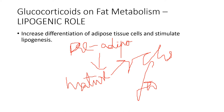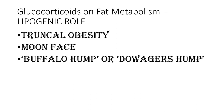The lipogenic effect of glucocorticoids varies in different regions of the body — there is selective accumulation of fat in certain regions such as the trunk, the face, and the back. This leads to the characteristic features of truncal obesity, moon face, and buffalo hump (or dowager's hump) seen in Cushing's syndrome.